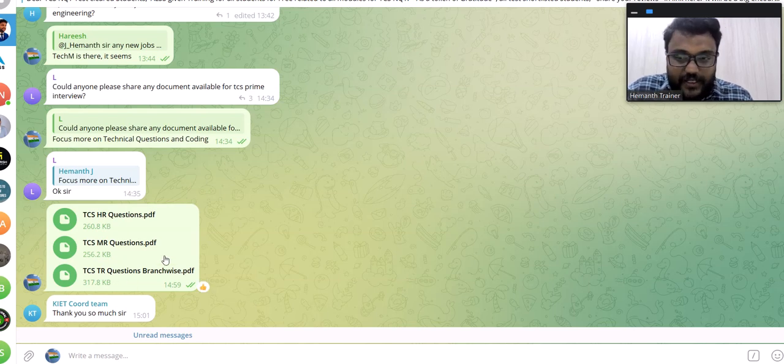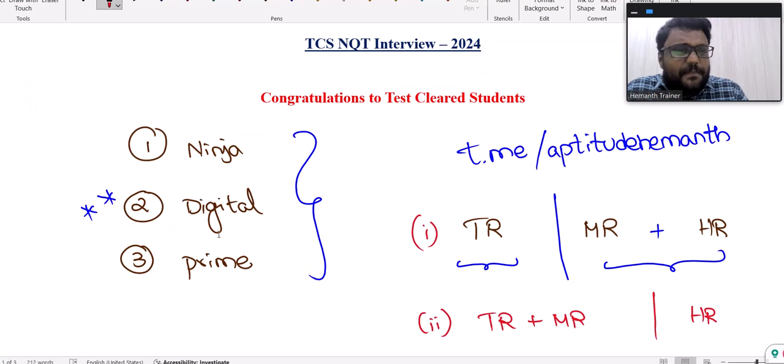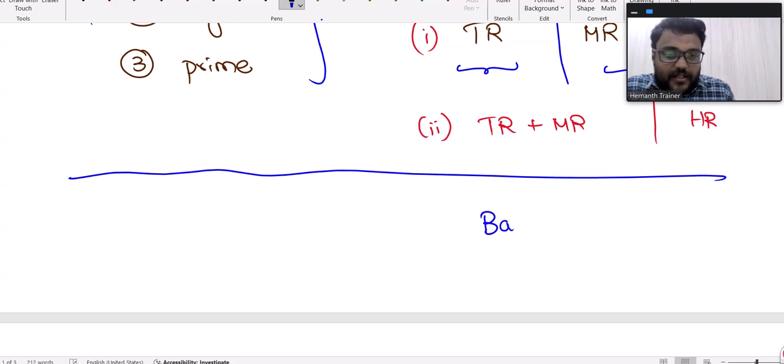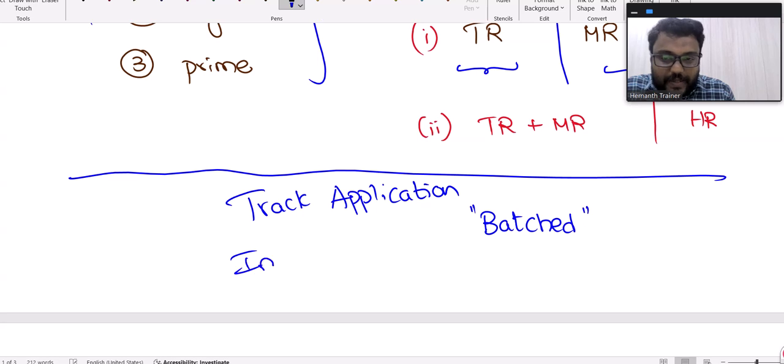Regarding batched inputs - once you get the interview schedule, you will get a batched message in the TCS portal. In the tracking application, after interview schedule, they'll update it as batched.